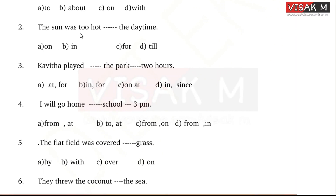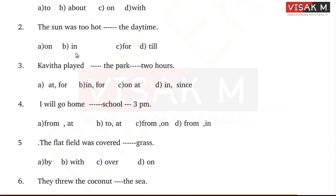The sun was too hot, dash the daytime. Time is a preposition context here. Four options: A - on, B - in, C - for, D - till.